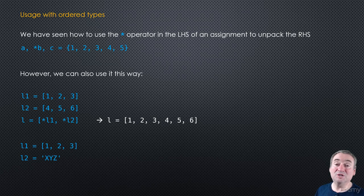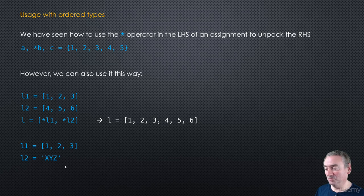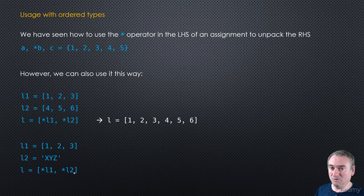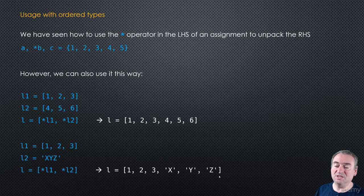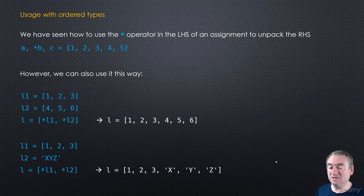It works with strings as well, since strings are iterables. So [*L1, *L2] where L1 is [1, 2, 3] and L2 is ['x', 'y', 'z'] will give you [1, 2, 3, 'x', 'y', 'z']. This is how you use the star operator on the right-hand side of an expression.